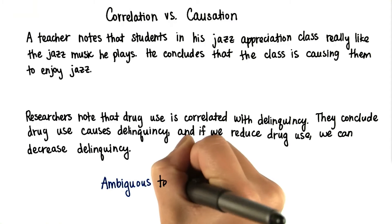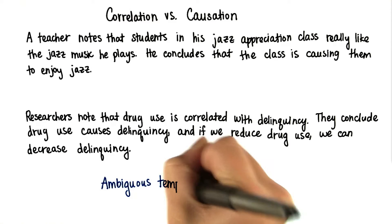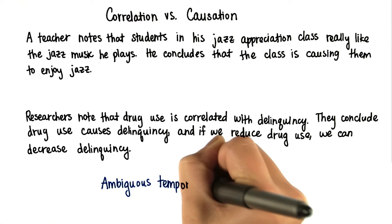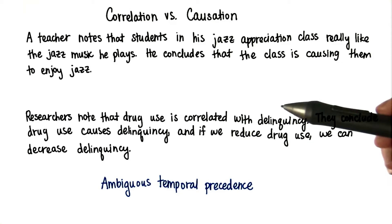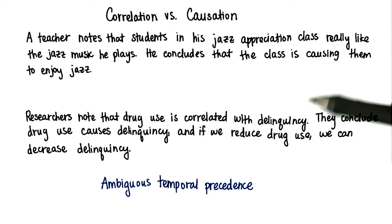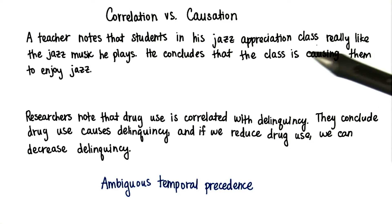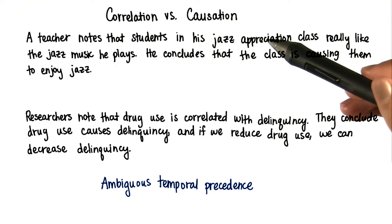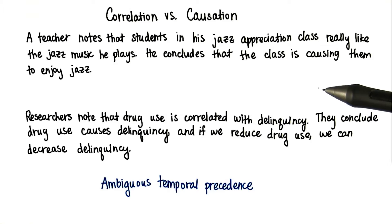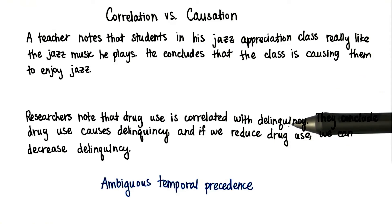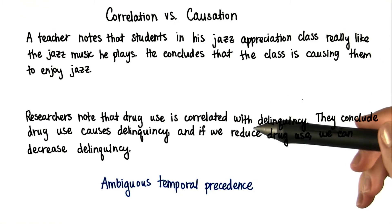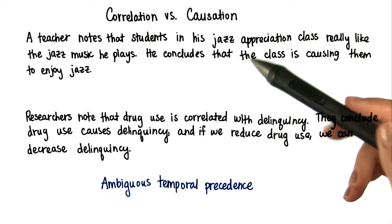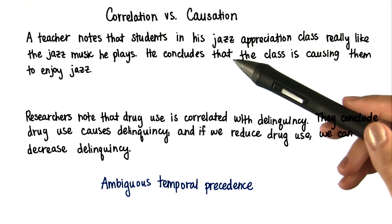In both of these situations, there's ambiguous temporal precedence. We don't know which variable occurred first — whether it was the class or the appreciation for jazz, or if it was drug use and then delinquency. Those are just two examples where we can't infer causality.